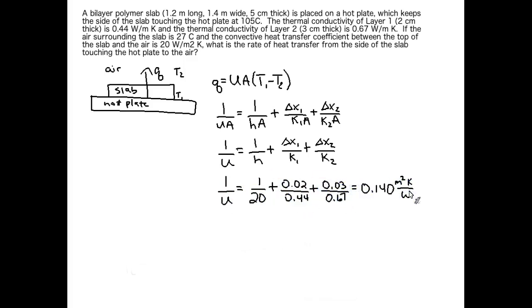1 over U is 0.14 meter squared Kelvin per watts. So where did those units come from? Those are just the reciprocal units for U. So if we take both sides and take the reciprocal of them, we do 1 over 0.140, this is what we get. U is equal to 7.13 watts per meter squared Kelvin.